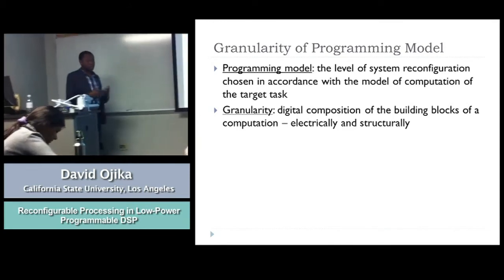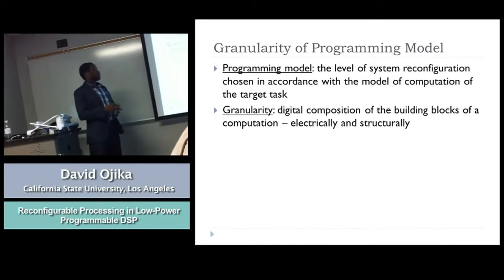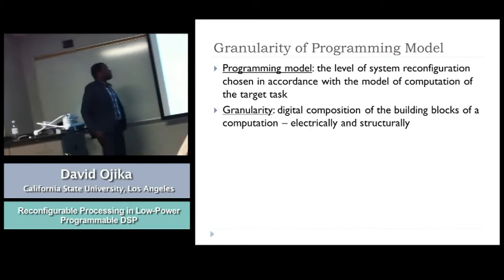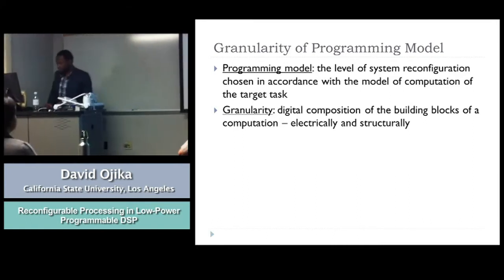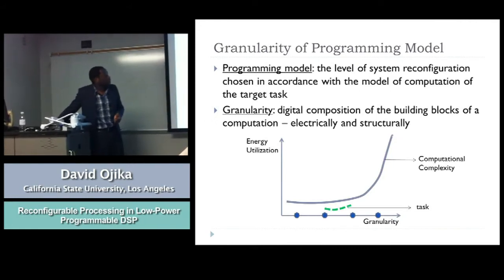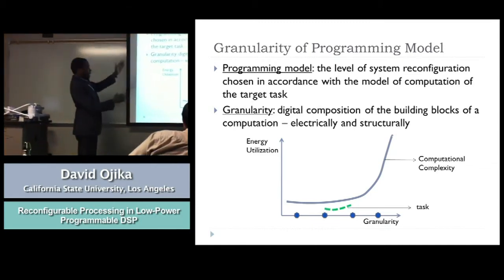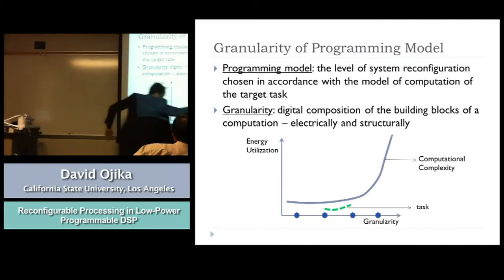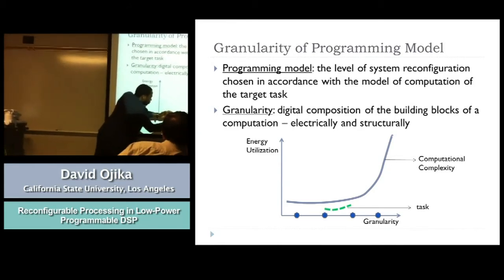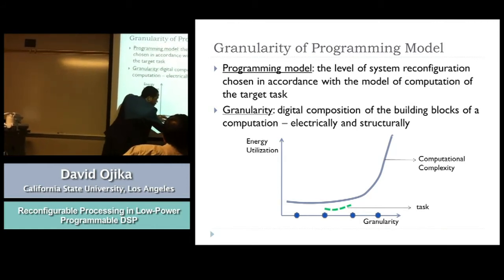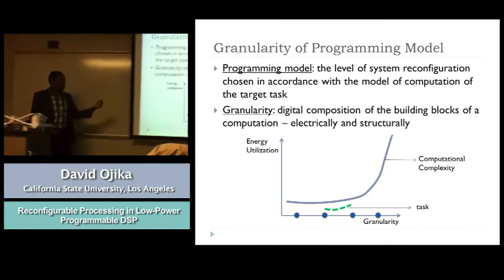The programming model defines the level of system reconfiguration that can be done to fit a particular task. If you can reconfigure the system to fit the task you want to run, then you can have a good energy-saving device. One key concept is granularity. The authors didn't fully define this concept, but based on my research I believe it is the digital composition of the building blocks that make up the functional units, both structurally and electrically. Here you can see a graph that models the exact behavior of computational complexity against energy utilization and granularity. As granularity increases, energy utilization also rises. So our task is to adjust to an optimal level whereby the task can match the functionality without consuming excessive energy.